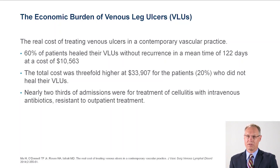The economic burden directly related to venous leg ulcers was published by Dr. O'Donnell et al. in the Journal of Vascular Surgery in 2014, demonstrating in a real contemporary vascular practice a total cost of approximately $10,500 over 120 days. The total cost was threefold higher if the ulcer failed to resolve. Nearly two-thirds of admissions were for treatment of cellulitis with intravenous antibiotics resistant to typical outpatient care. Most of this is related to the undiagnosed aspect of the associated flebolymphedema.